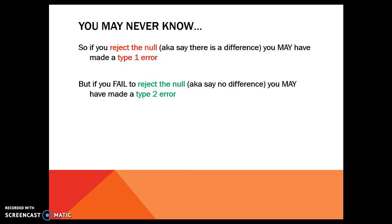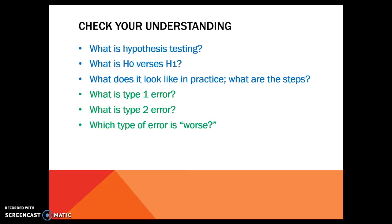The weird part is that these errors we probably are never going to know if we made or not. So we want to keep the study — we want to do everything we can to avoid these — but if we reject the null and say there's a difference, I might have made a type 1 error. I probably won't know this until someone tries to replicate my study, or I get more data and do the test again and again. I may not ever know. Keep these in mind, and we're going to be talking about them throughout the hypothesis testing problems. Take a moment, check your understanding, make sure that you get the concept of hypothesis testing, and of course the difference between type 1 and type 2 errors.